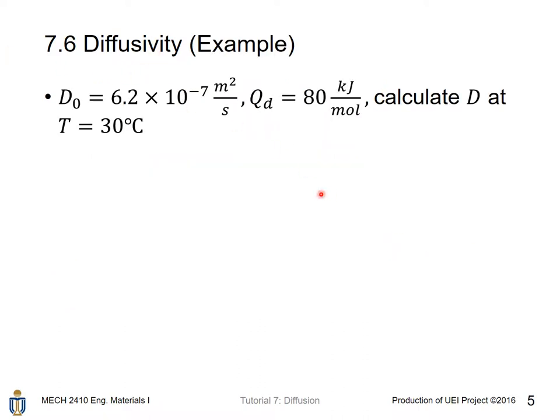Consider the following example. D₀ is 6.2 times 10 to the power -7. Qd equals 80 kJ per mole. And calculate diffusivity at temperature equal to 30 degrees Celsius.